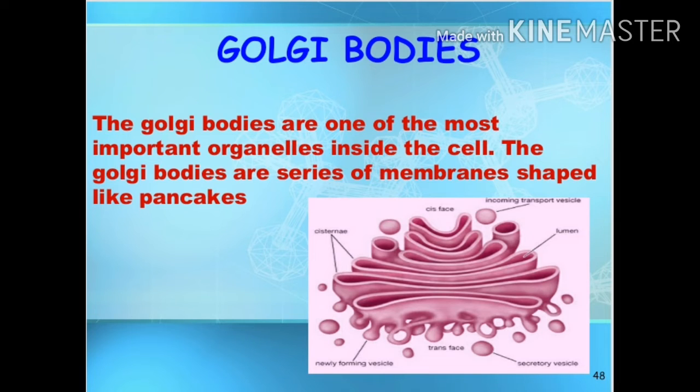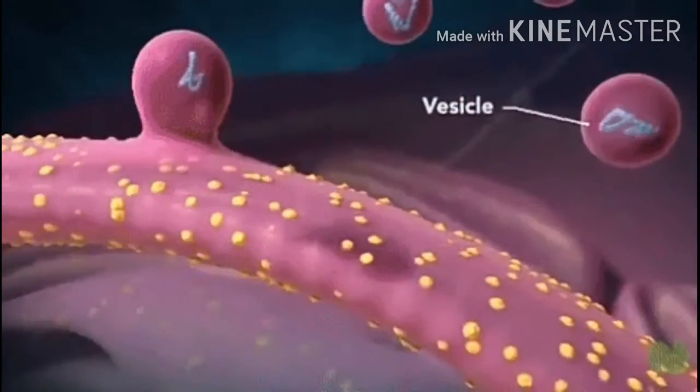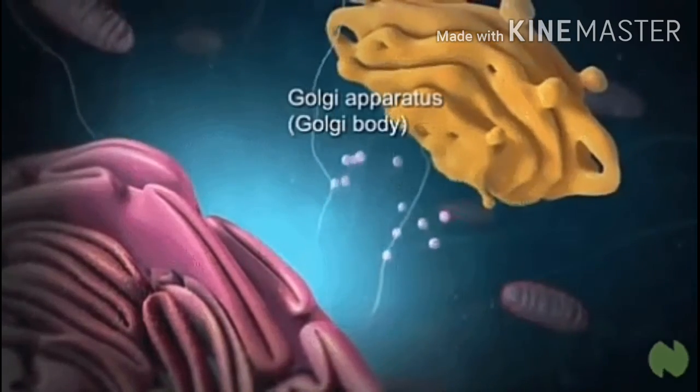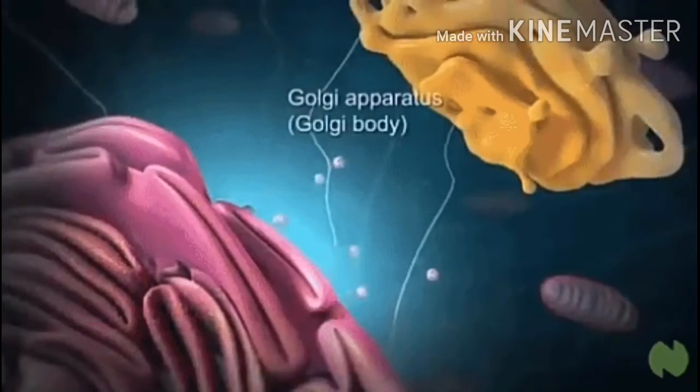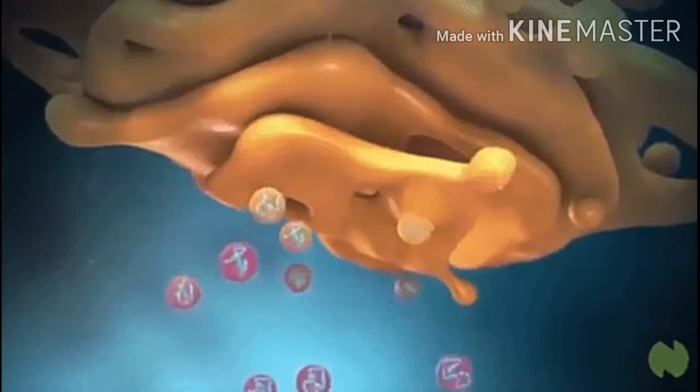Golgi bodies. They are flat, membranous, sac-like structures that are found near the nucleus of most cells. They are arranged in stacks. They are secretory organelles. They secrete substances such as enzymes and proteins. In plant cells, Golgi bodies are not well defined and are called dictyosomes.